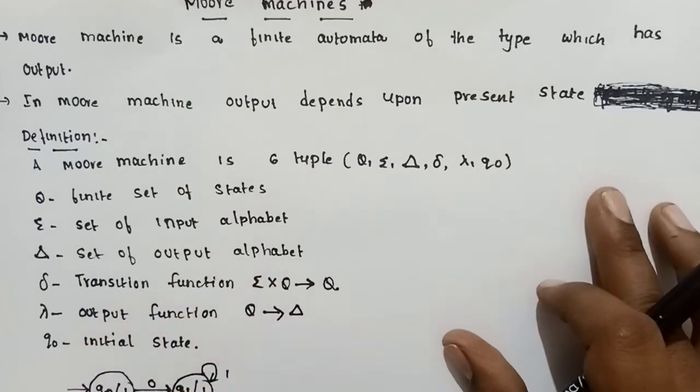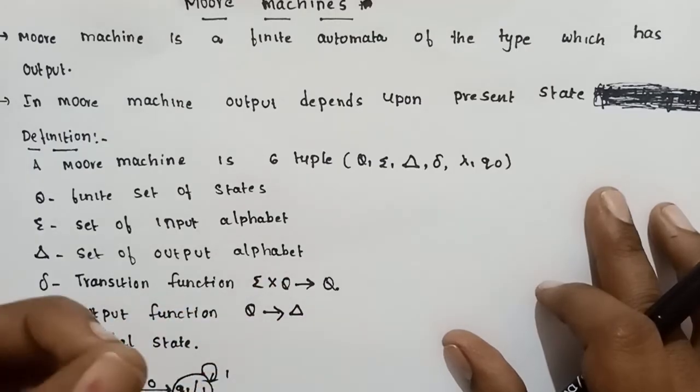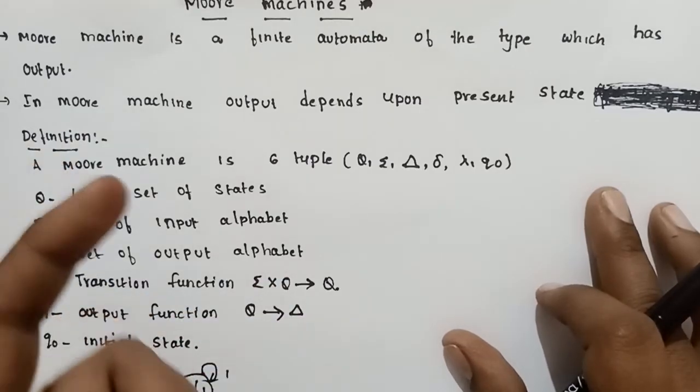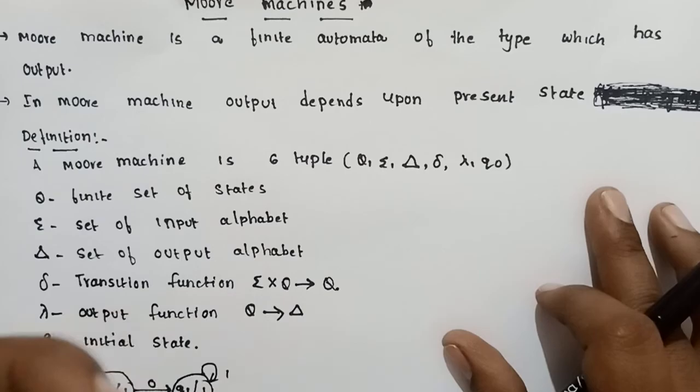Moore and Mealy machines. Output is divided into the process. This is a finite automaton with output.